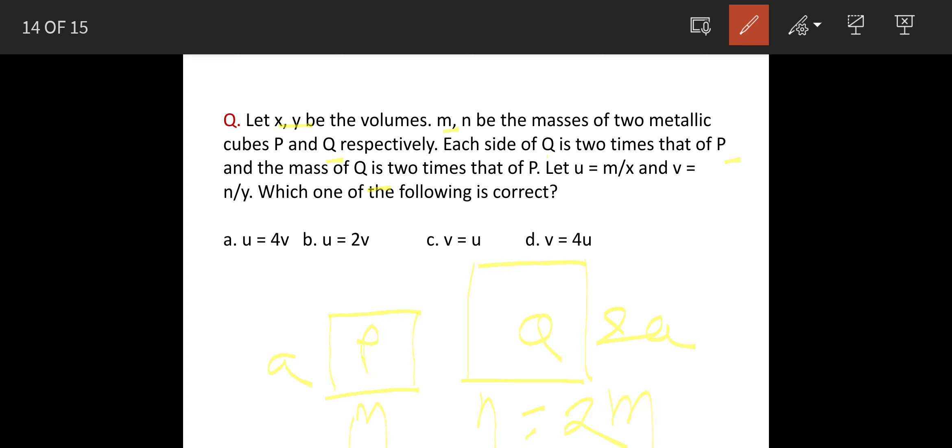So with this data we have to find out factors U and V which are equal to M upon X and N upon Y, that is mass upon volume for both the cubes, and these are the options given.